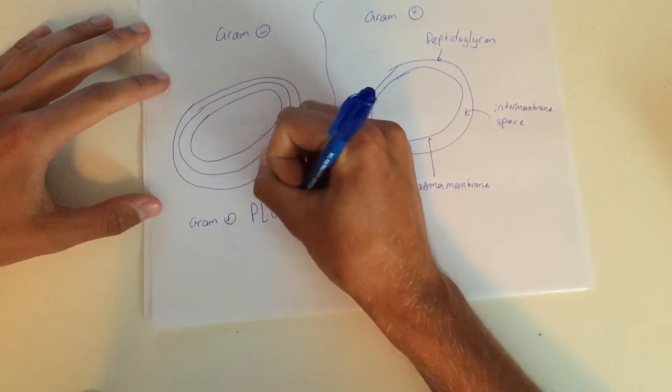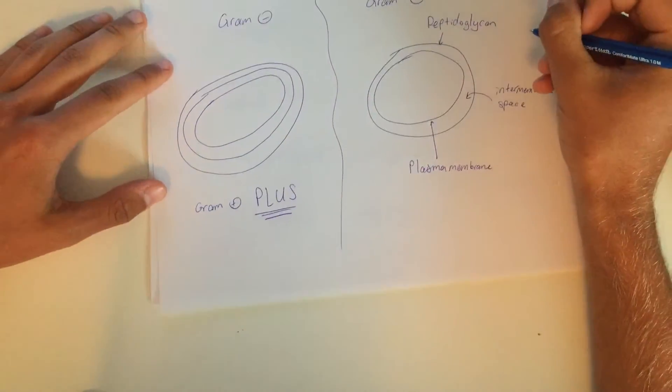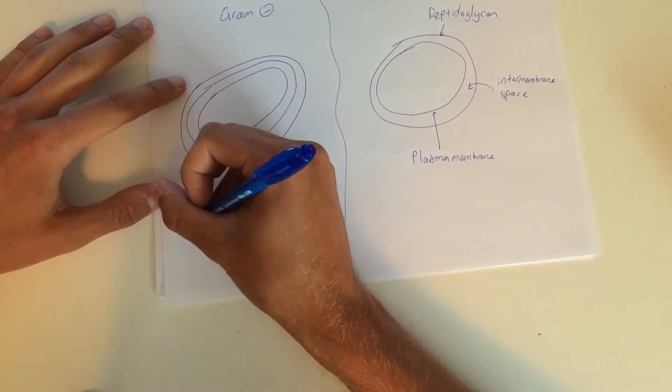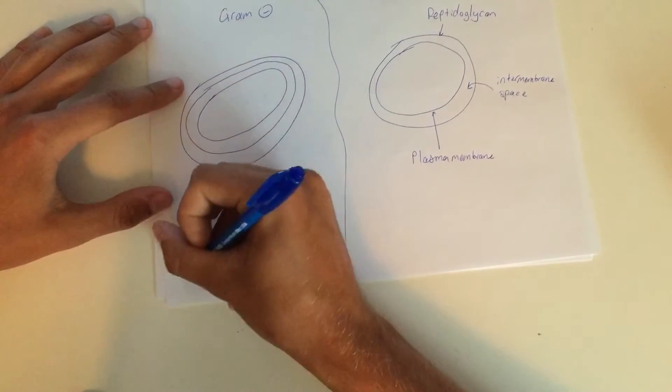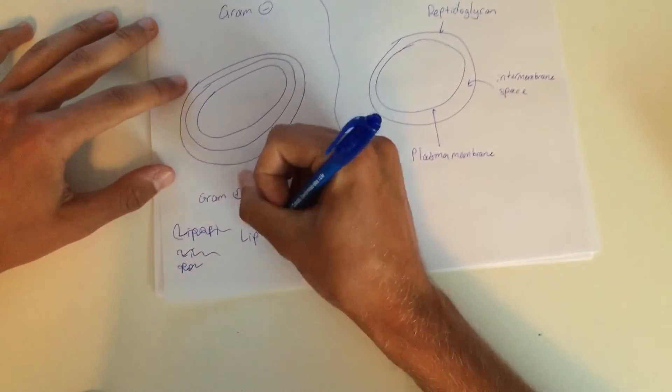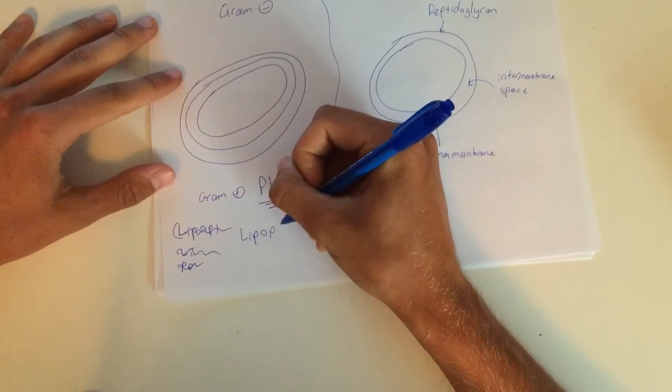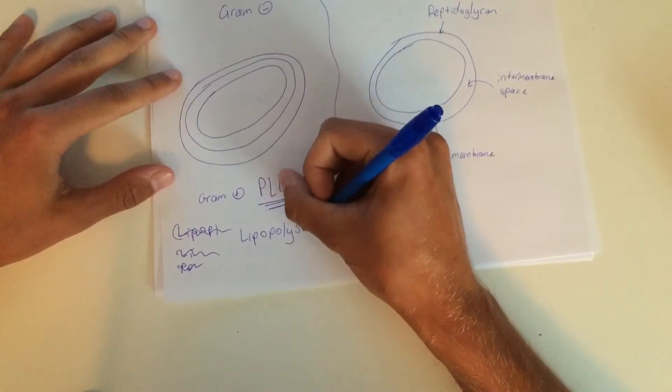However, gram-negative bacteria has a third layer which sets it apart from the gram-positive bacteria when interacting with antibiotics. This outer layer is called the lipopolysaccharide membrane. But we'll worry about that later.